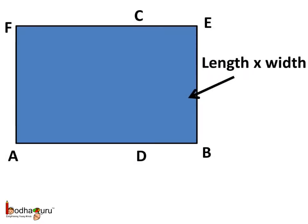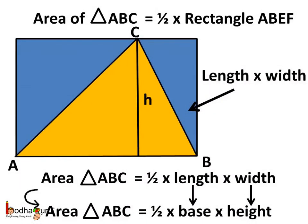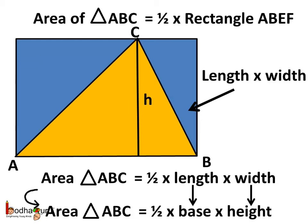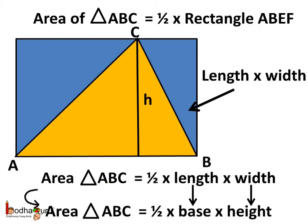Now, we know the area of a rectangle is length multiplied by its width. So we can say, area of triangle ABC is equal to half multiplied by length multiplied by width of the rectangle. Or we can say, it is equal to half the base multiplied by height of the triangle. Because the length of the rectangle is actually the base of this triangle, and the width of the rectangle is also the height of triangle ABC.